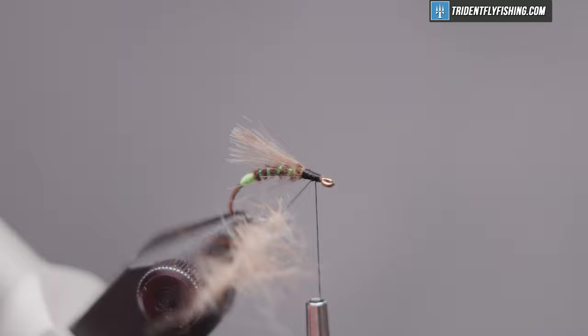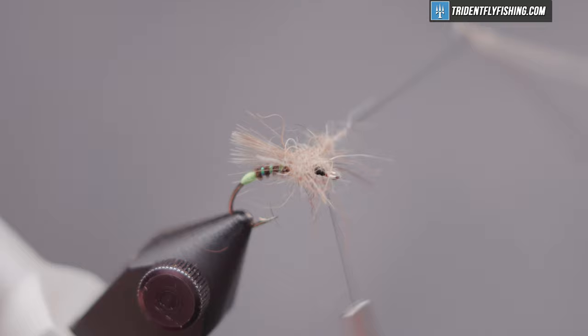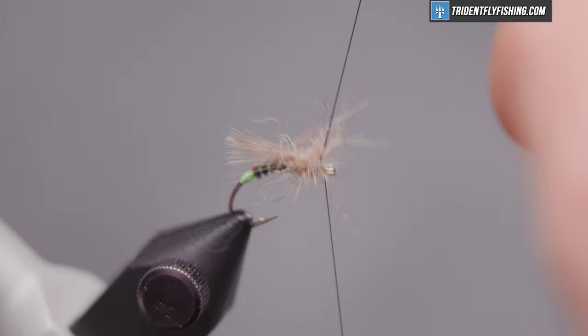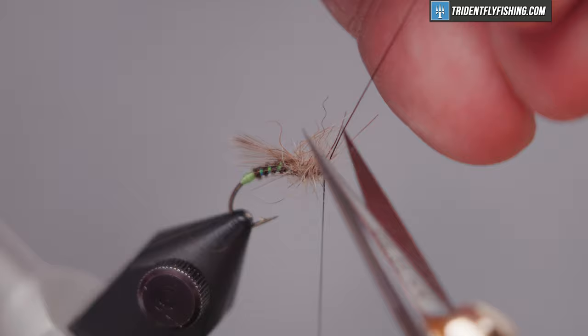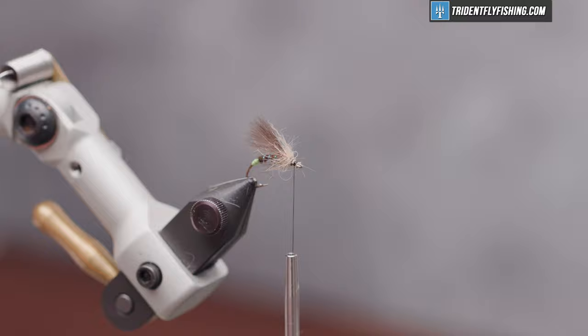Spin that up. And wrap that around. Form a nice spiky thorax, like that. When I reach the eye, I'll capture our material. Cut the thread. I'm going to run that thread back just about a half an eye length or so, where we're going to tie in our wing.